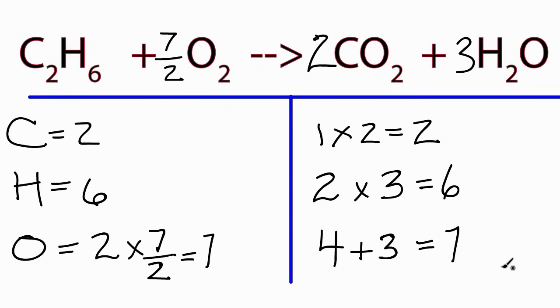Now we don't have whole numbers yet, but that's pretty easily remedied. Let's multiply the entire equation by two. So if I multiply this by two, the coefficient would be two. Two times seven over two, well that equals seven. Two times two is four. And two times three is six.